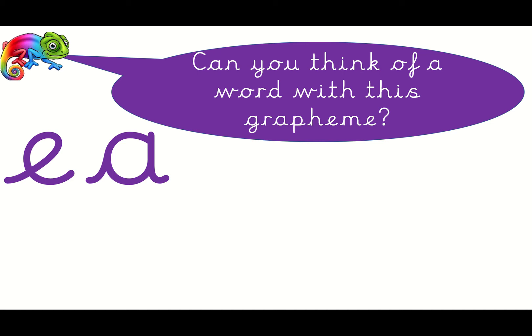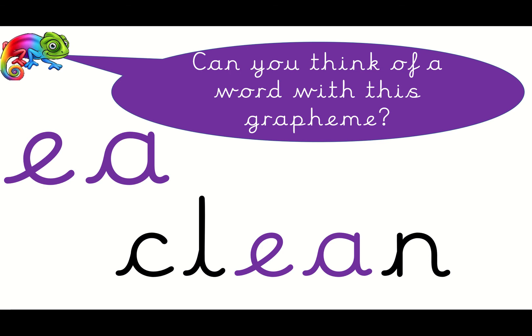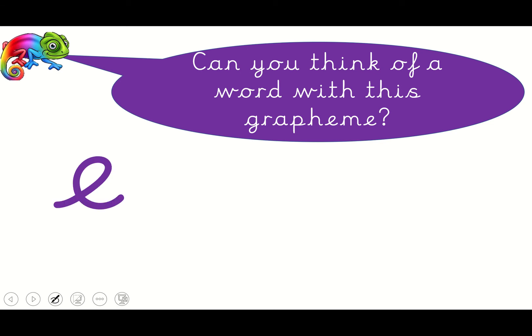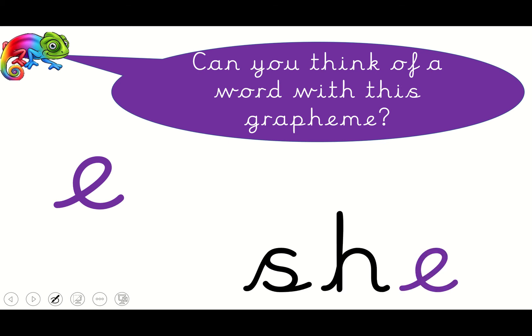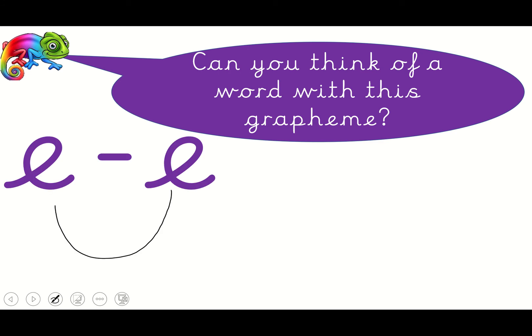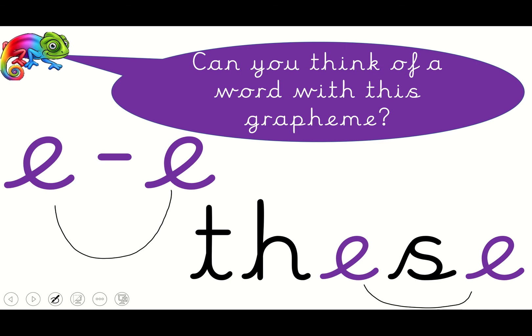Do you remember this E? Yeah — E-A — and it's in things like 'clean.' It still sounds like E, it just looks a bit different. What about this one? Do you remember learning this one? It's just an E by itself, like in the word 'she.' And ooh, do you remember this one? It's a split digraph, and they're quite difficult to spot sometimes, aren't they? Like in this word — 'these.'